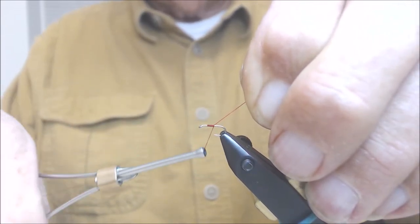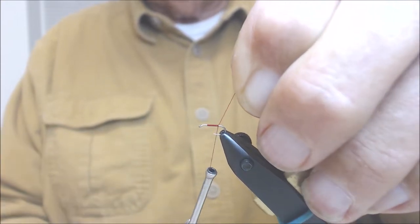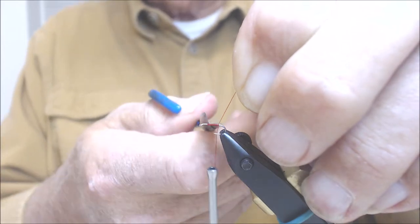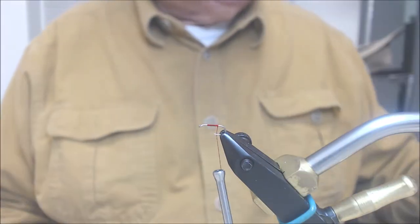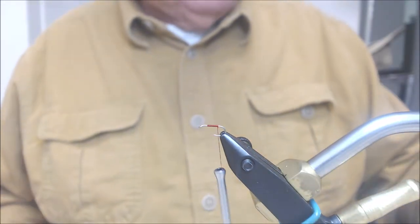I'll go ahead and lay a layer of thread down the shank to the point where the barb would be. Keeping in mind that midges are very slim, so you want a very slim profile. That's why we're using 12-aught. If you have 8-aught, that would probably work, but this just seems to do a little better job.